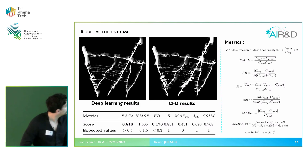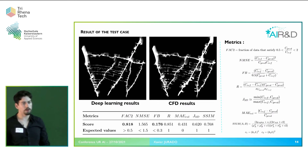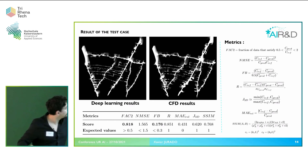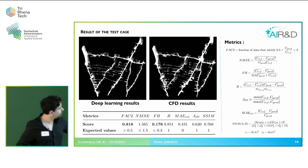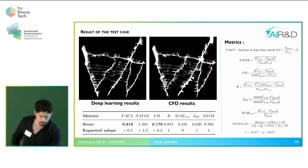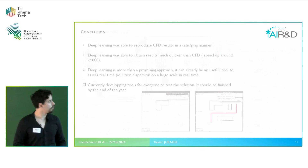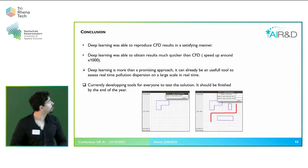Now to compare the results: here we have the deep learning results and here we have the CFD results. In the air quality field, there are three metrics to determine if a model performs well: Fact 2, normalized mean squared error, and fractional bias. To determine if the model performs well, it needs to be above or around the threshold. For Fact 2 and fractional bias it performs really well, and for the normalized mean squared error it is around the proper value to be considered a good model. With this example, we validated that our model performs well and is far faster than CFD while managing to reproduce its results.